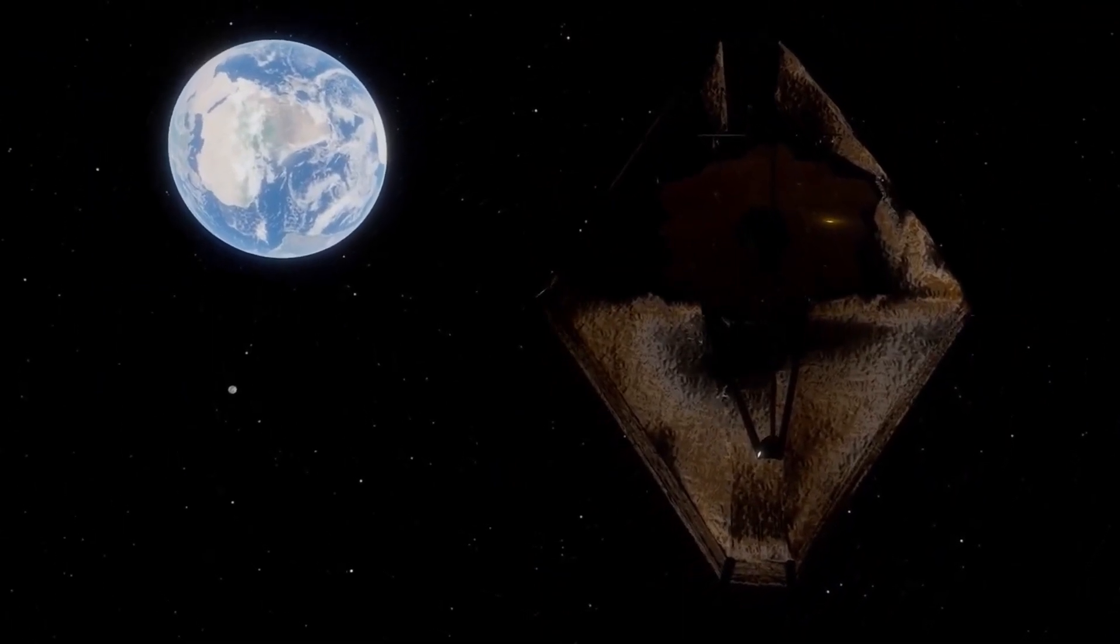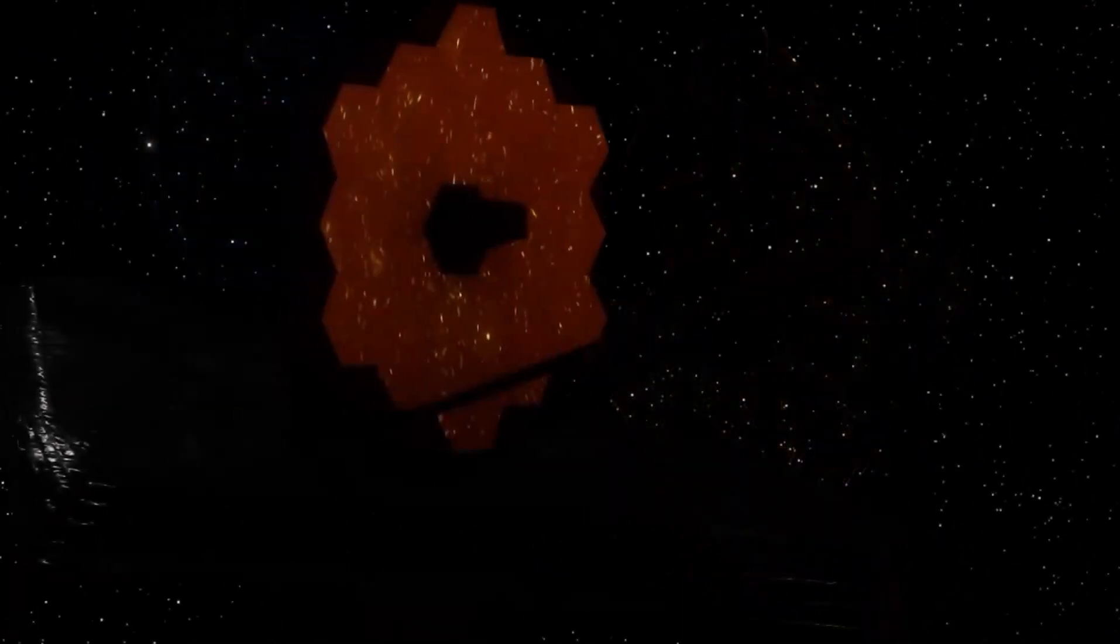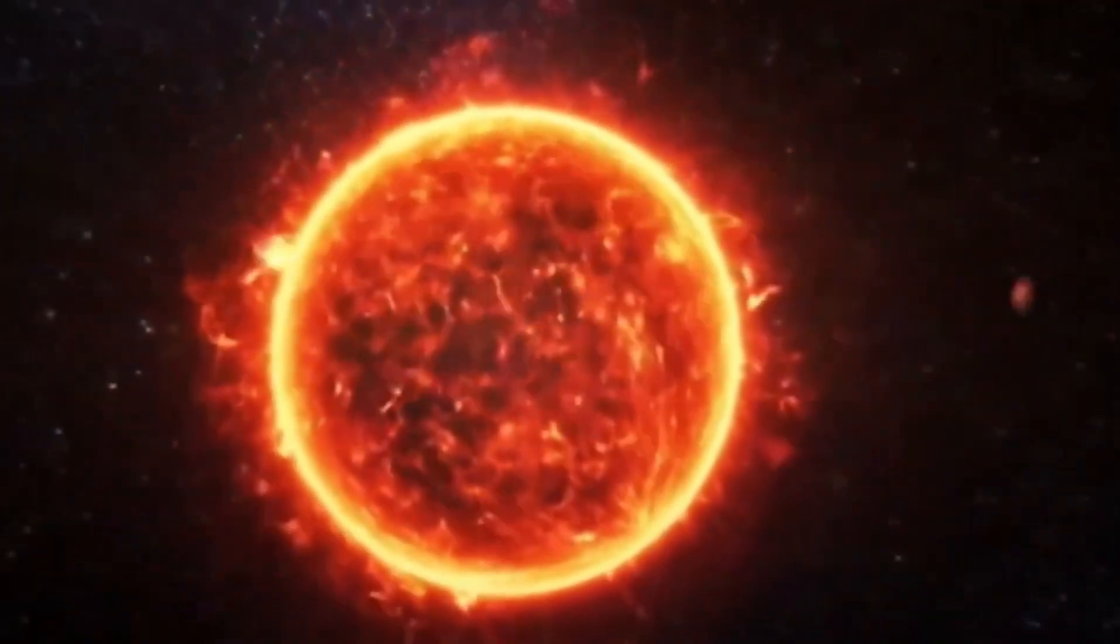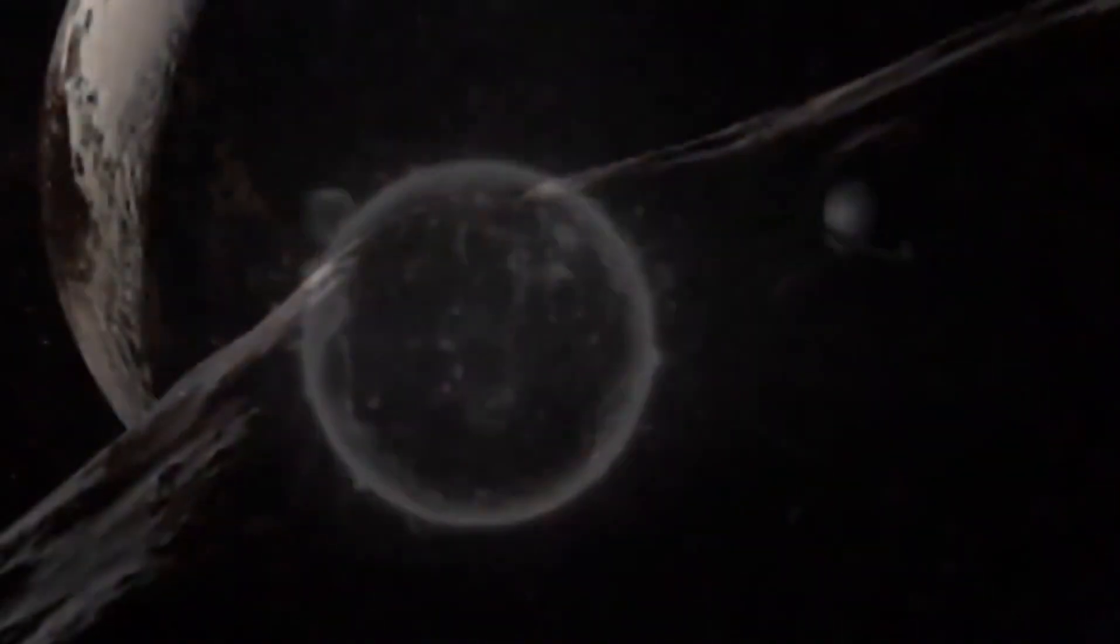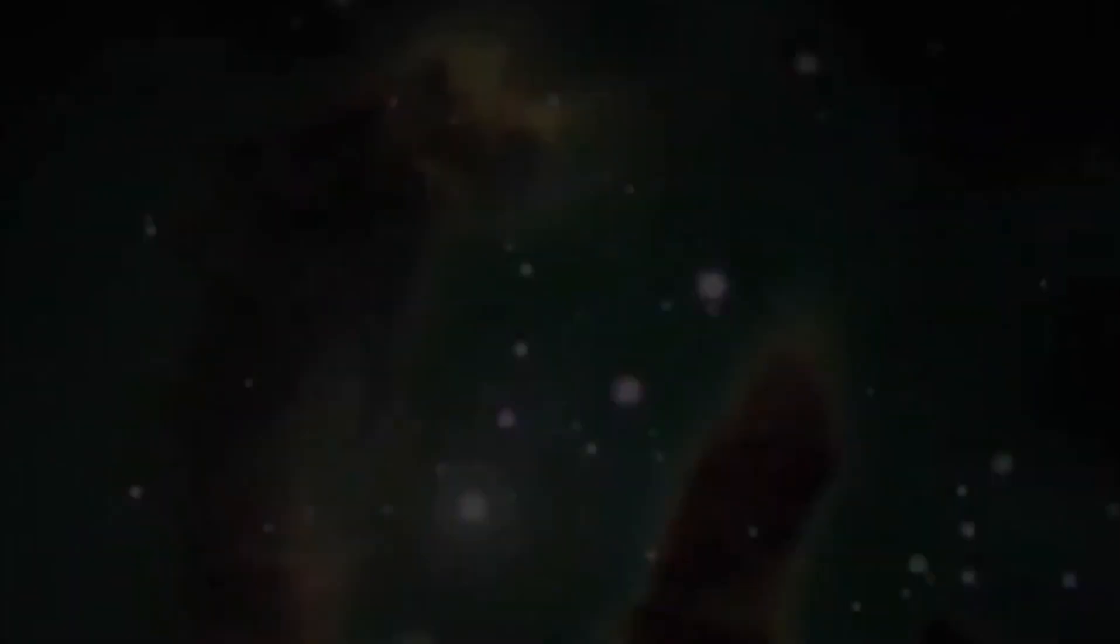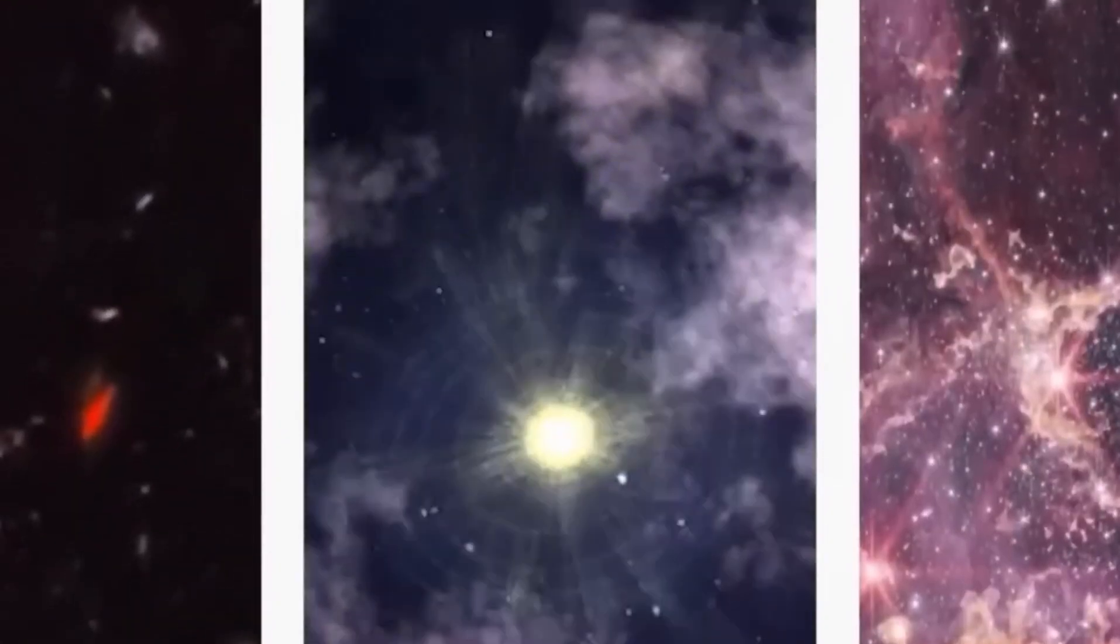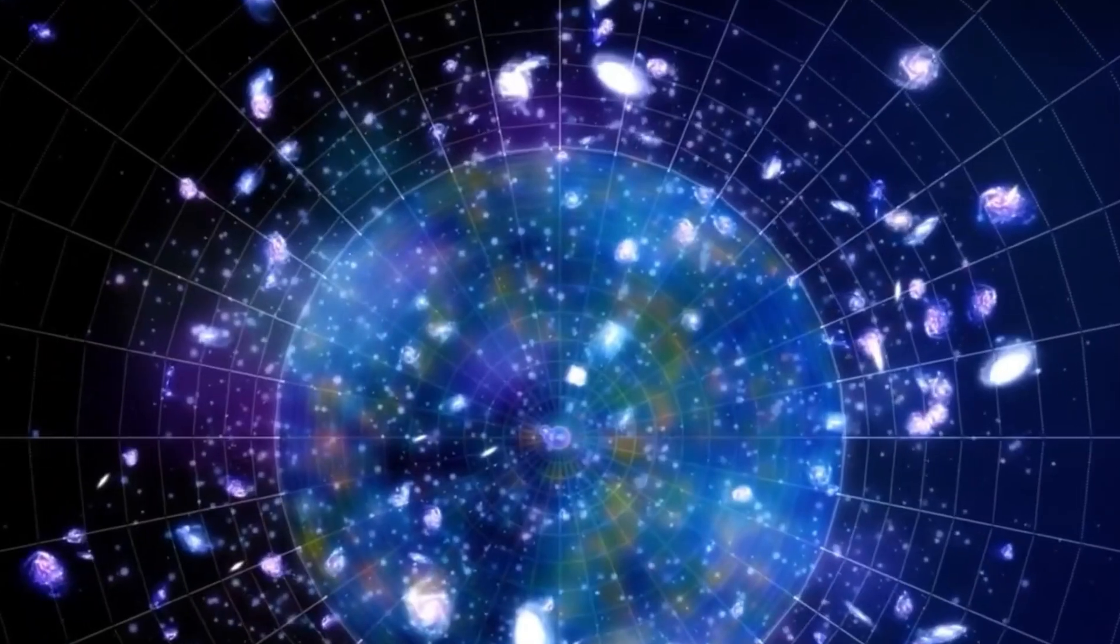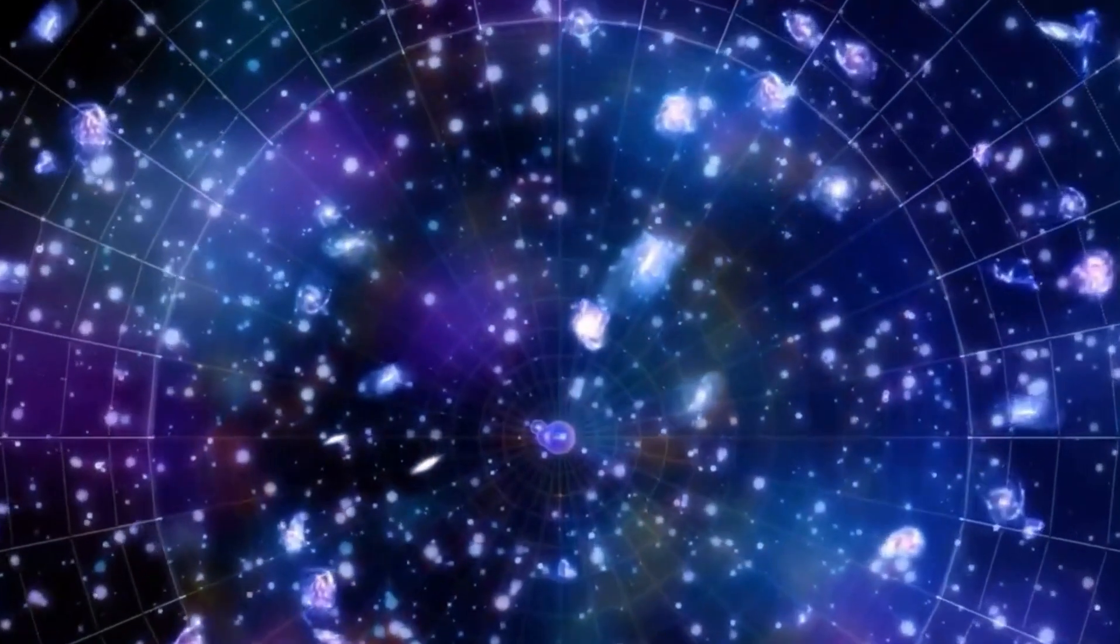Among the Voyager probes, Voyager 2 stands out for its significant milestones. In 1986, it became the first spacecraft to approach Uranus closely, providing humanity its inaugural up-close encounter with this enigmatic planet and its moons. Three years later, Voyager 2 achieved another groundbreaking feat with a flyby of Neptune. To this day, Voyager 2 remains the singular spacecraft to venture into the regions of Uranus and Neptune, a testament to its pioneering spirit.